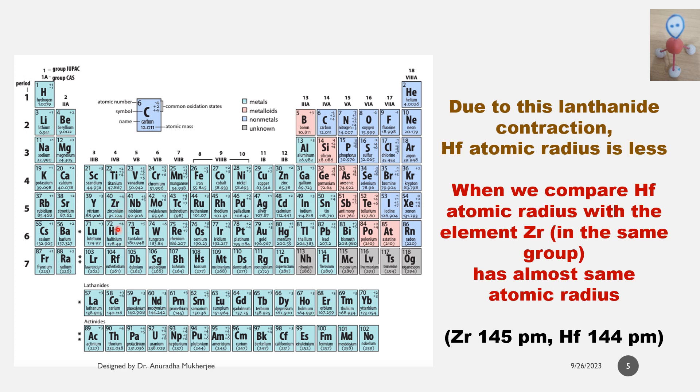So when we compare the atomic radius of zirconium and hafnium, we can see that hafnium atomic radius is almost equal to zirconium atomic radius. The reason is lanthanide contraction.